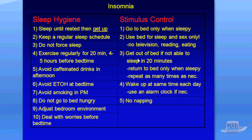Number three for stimulus control: get out of bed if not able to sleep within 20 minutes. Only return to bed when sleepy, and repeat this as many times as necessary throughout the night — this ensures you only associate sleep with the bedroom. Number four: wake up at the same time each day; use an alarm clock if necessary. This is congruent with keeping a regular sleep schedule. Finally, no napping — napping in the afternoon rejuvenates you and reduces your homeostatic drive to sleep at nighttime.